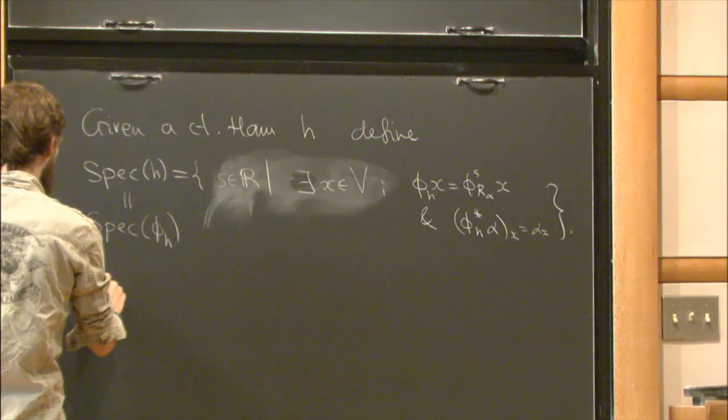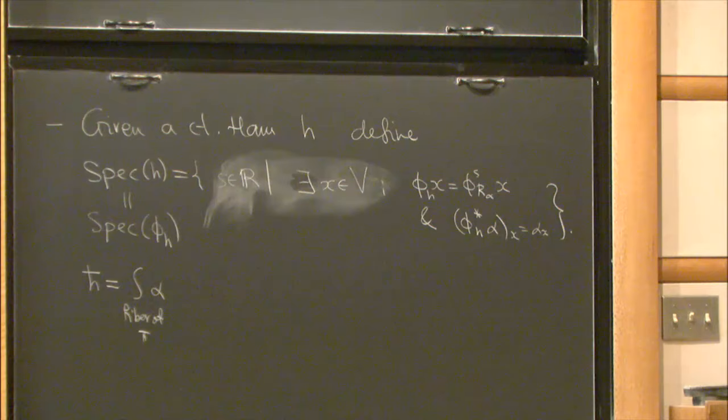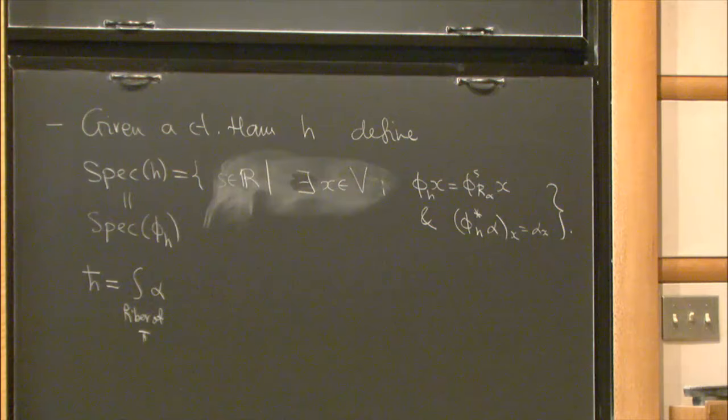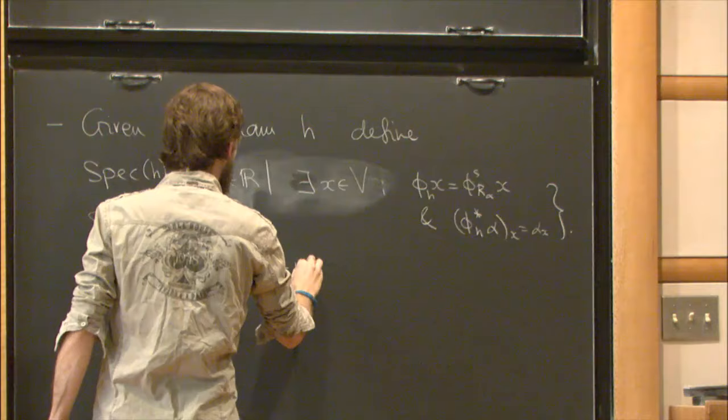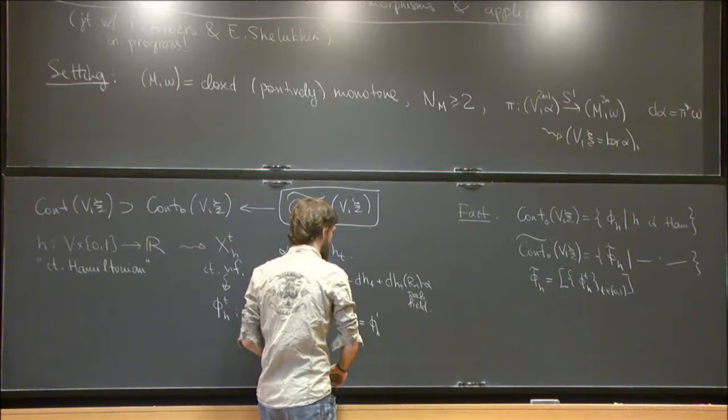Note that this thing is h̄-periodic, where h̄ is the integral of α over a fiber of π — just the Reeb length of a single fiber — because the Reeb flow is h̄-periodic. OK, so I can formulate the main theorem now.